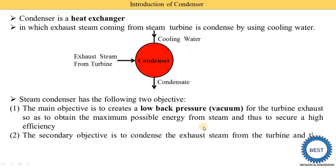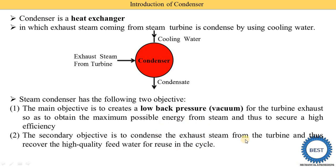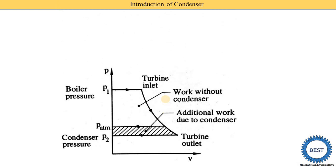The secondary objective is to condense the exhaust steam from the turbine and thus recover high quality feed water for reuse in the cycle. The exhaust steam converted in the condenser becomes water, and this water is again supplied to the boiler — so we can use the water again and again and require less quantity of fresh water. Now, looking at the PV diagram: on the y-axis is pressure and on the x-axis is volume.